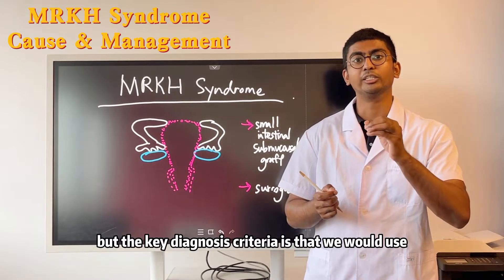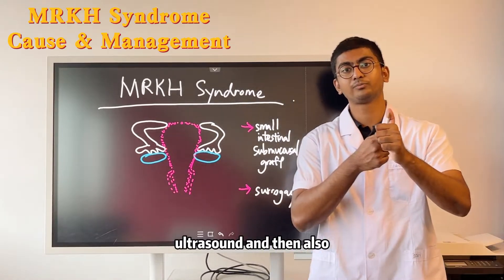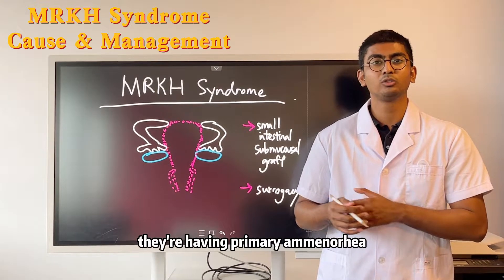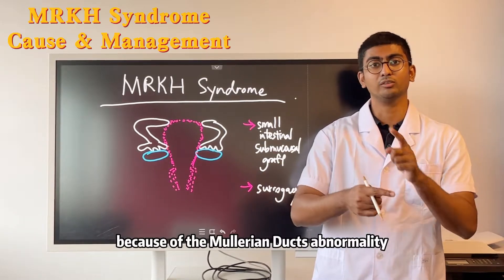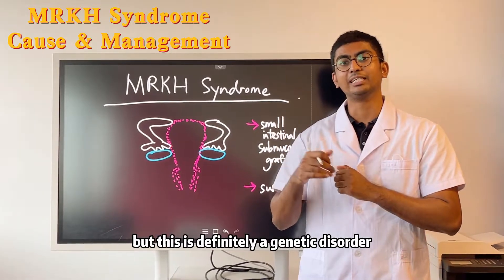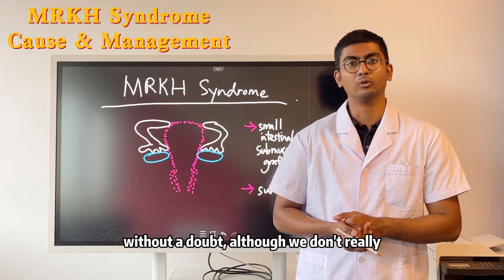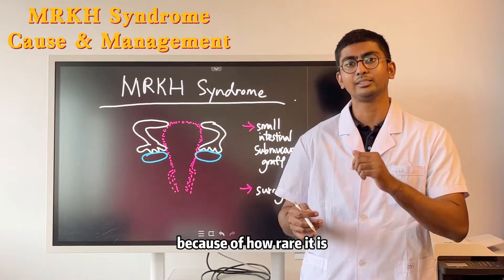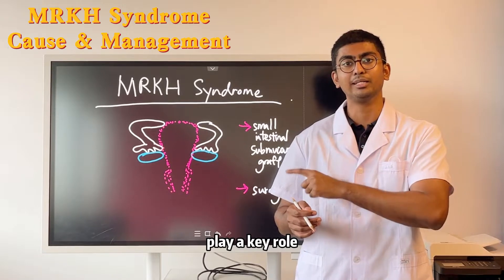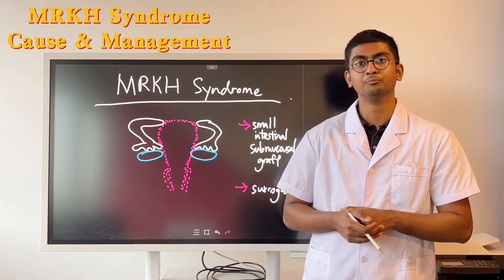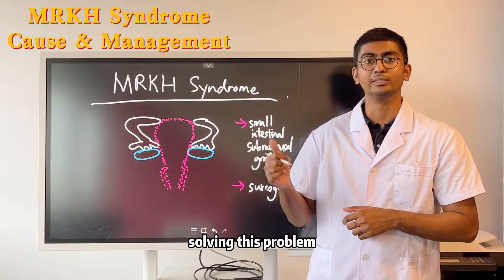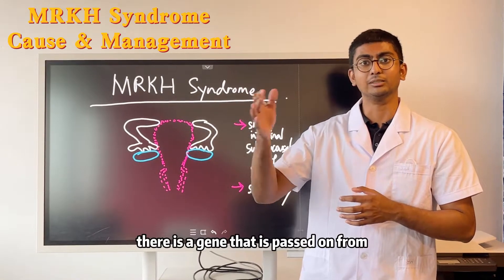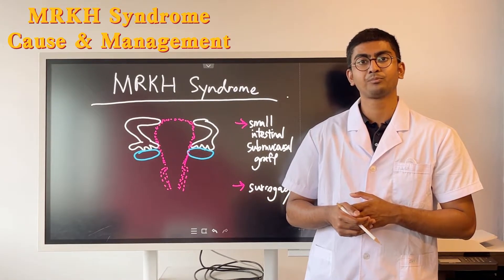The key diagnostic criteria are ultrasound findings and the presence of primary amenorrhea. The cause is Müllerian duct abnormality, and this is definitely a genetic disorder. Although it is not yet fully understood due to its rarity, we know certain genes play a key role, and it is an inherited condition passed down from generation to generation.